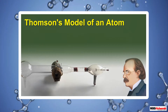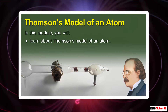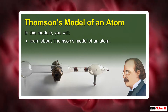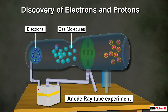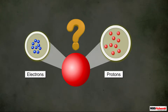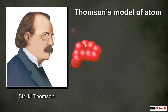In this module you will learn about Thompson's model of an atom. After the discovery of electrons and protons in an atom, the next challenge in front of scientists was to know about their arrangement inside the atom. Sir J.J. Thompson was the first one to address this problem.